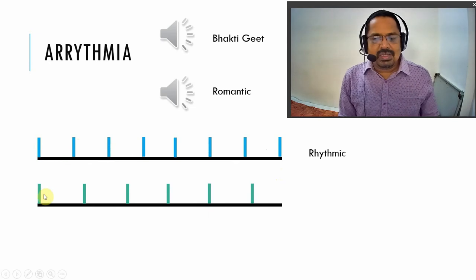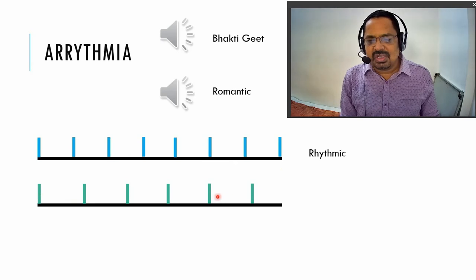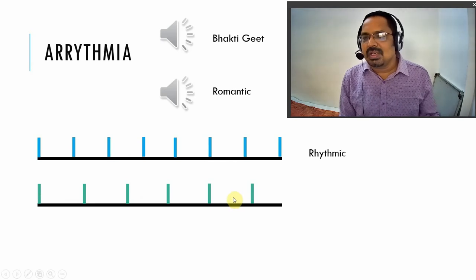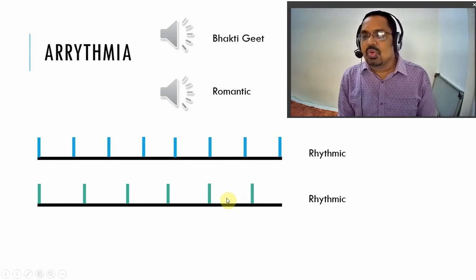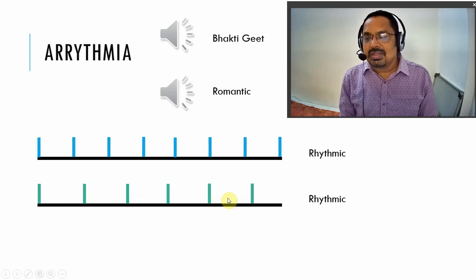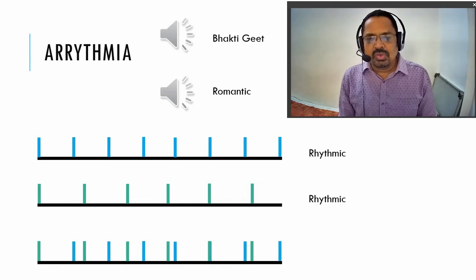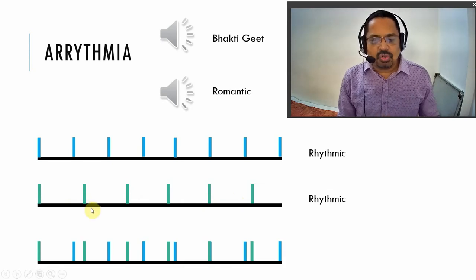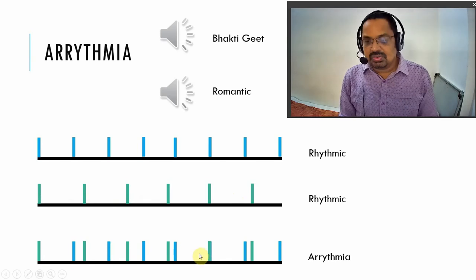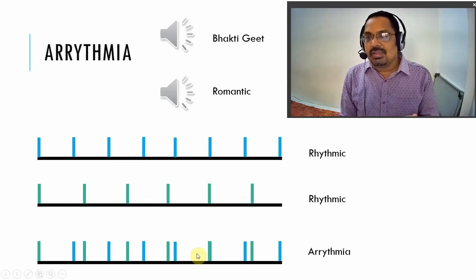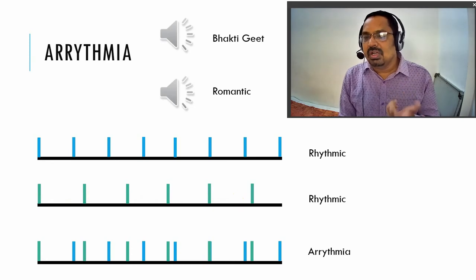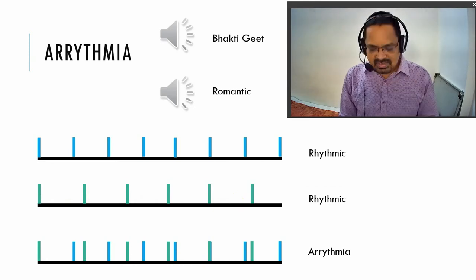The second part is a little bit longer, but again there is perfect differentiation and every event is taking place in a perfect direction — it is also rhythmic. But if you mix both together, the first event and second event combined become arrhythmia. This is what is happening inside the heart.